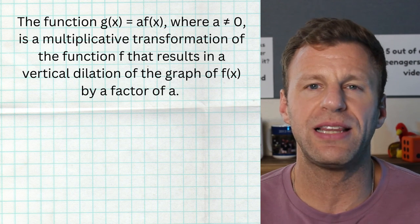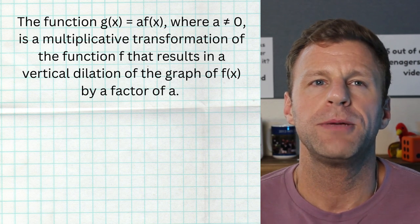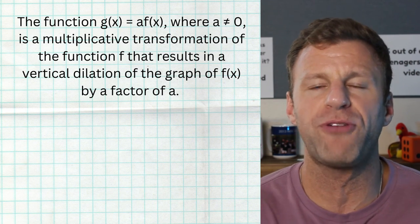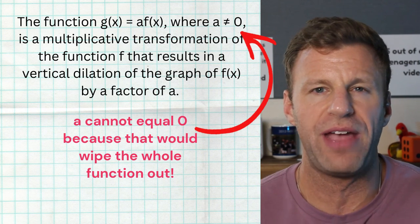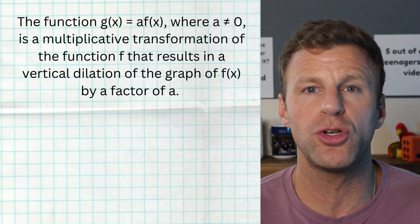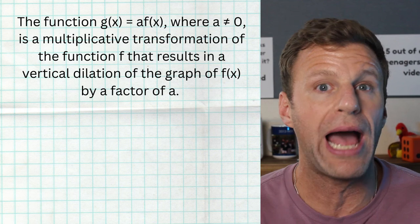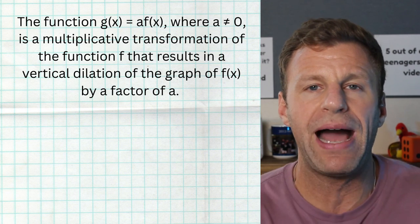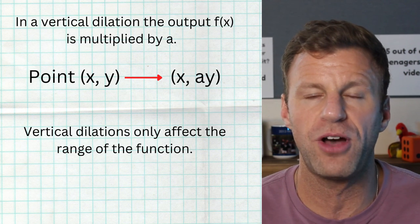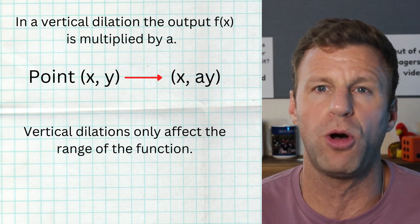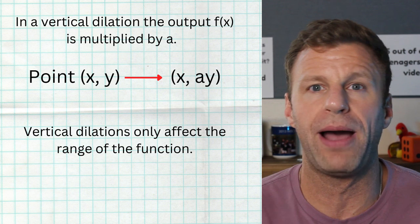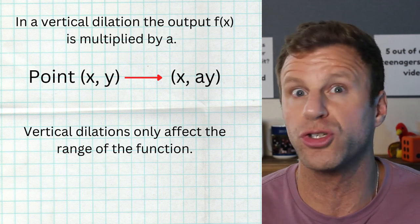A vertical dilation is what we call a multiplicative transformation — we're multiplying our functions. A vertical dilation happens when you multiply in front of your function by an a value, giving you a times f of x. This is going to multiply your outputs by the absolute value of a. If you have a factor of two out in front, all of your outputs multiply by two, which stretches the graph. If you have one-half out in front, you multiply by one-half, which compresses or shrinks the function.